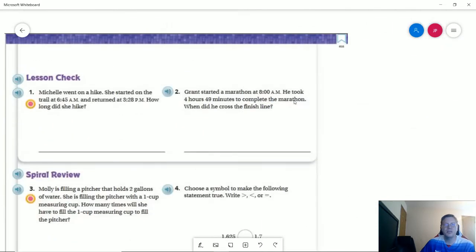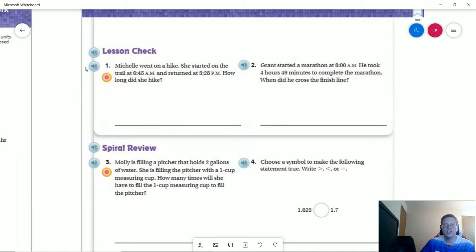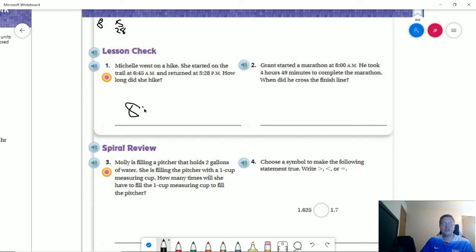We're skipping number 16, number one on the back. So this one, we started at 6:45 AM, went to 3:28 PM. So we could say that we go 15 minutes to get up to seven. And then we are going forward five hours to get to noon and three more hours to get to 3 PM. So that would be eight hours and 15 minutes so far that's accounted for plus 28. So that would give us 43 minutes. And so that should be eight hours and 43 minutes.